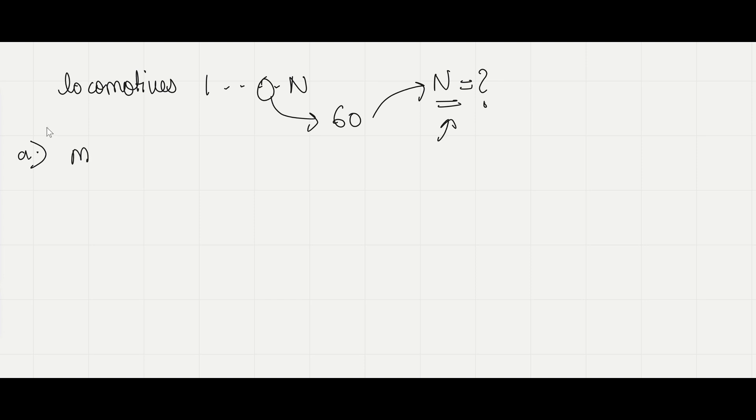So first method that we will use is the maximum likelihood estimate. So we need to make an estimate for capital N. Now, since we have seen a locomotive which is numbered 60, we are confirmed that there are at least 60 locomotives.